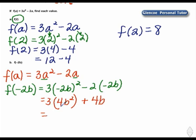3 times 4b squared is 12b squared plus 4b. Because these terms are not like terms, we are finished. f(2) is 8, and f(a), when a is negative 2b, is 12b squared plus 4b.